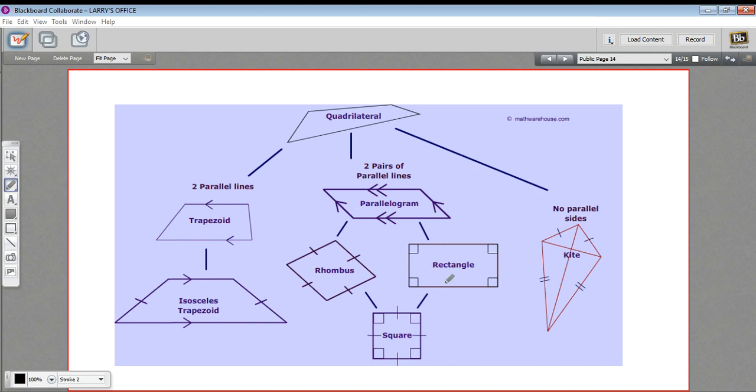What makes a rectangle a rectangle is that in addition to being a parallelogram, it has four 90-degree angles. What makes a square a square is that in addition to being a parallelogram and a rectangle, all its sides are the same length.